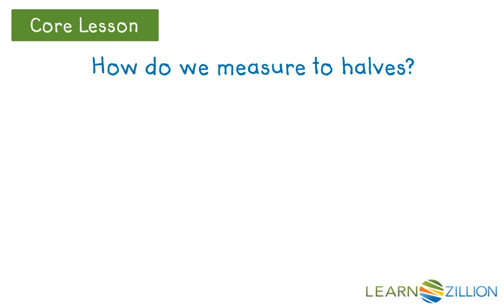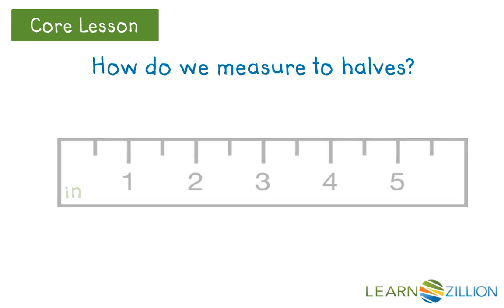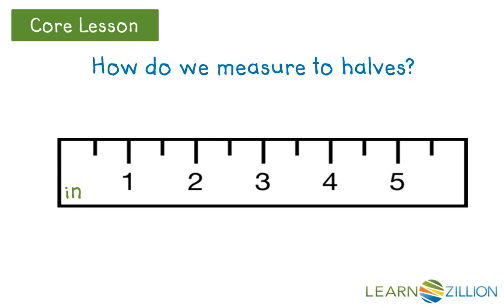How do we measure using halves? Using our ruler, we can mark our halves. On this ruler highlighted in blue, we can see one half, one, one and one half, two, two and one half, three, three and one half, four, four and one half, five, five and one half, and six. Using these marks, we would be able to measure objects to the nearest one half. The half mark helps us see if the object we are measuring is closer to one whole number or the other.